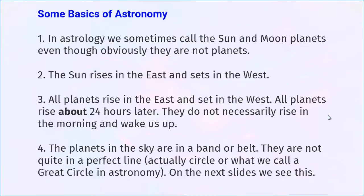We need to make a little digression here and learn some basic astronomy. Number one, terminology. In astrology, we often call the sun and moon planets. For example, if you say you have a lot of planets in Gemini, you might mean your sun, Mercury, and Mars. We get so accustomed to this that we may not even realize we're calling the sun and moon planets, even though technically they're not actually planets. When we use the word planets in vibrational astrology and most forms of astrology, that includes the sun and moon.